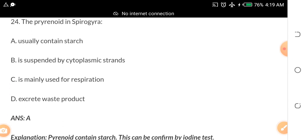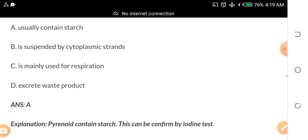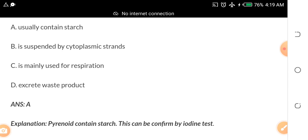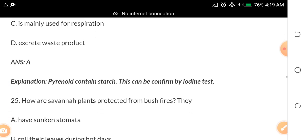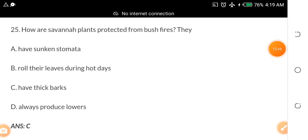The pyrenoid in Spirogyra A. usually contains starch B. is suspended by cytoplasmic strand C. is mainly used for respiration D. secretes waste product. The answer is A, pyrenoid contains starch. This can be confirmed through iodine test. Remember that we have done several other videos on Use of English, biology, the JAMB novel, chemistry, physics. We have done several videos, parts upon parts.